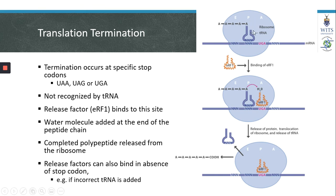Once the last codon bound by a specific transfer RNA and its amino acid encounters the stop codon, a release factor called ERF1 will bind to the stop codon. The release factor does not contain an amino acid at its three-prime end, but instead contains a water molecule. The ribosome will then catalyze a bond between the last amino acid in the peptide chain and this water molecule, resulting in the formation of a carboxylic acid at the end of the polypeptide chain and release of the polypeptide from the ribosome.